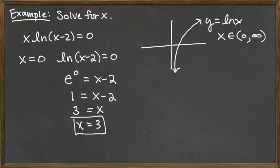And so rather than boxing this x equals 0, I should cross it out, because while solving our equation resulted in giving us that solution, and I say that kind of in quotes because it's not a solution, it's an extraneous solution.